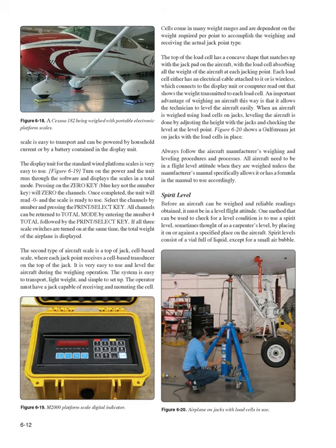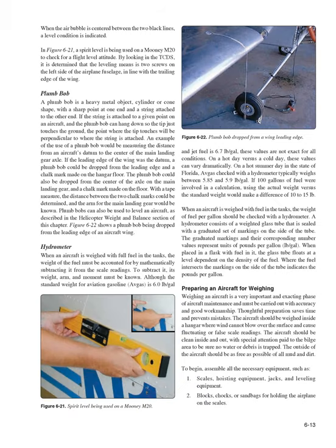Always follow the aircraft manufacturer's weighing and leveling procedures. All aircraft need to be in a flight level attitude when weighed unless the manufacturer's manual specifically allows otherwise. Spirit Level: Before an aircraft can be weighed and reliable readings obtained, it must be in a level flight attitude. One method is to use a spirit level (similar to a carpenter's level) by placing it on or against a specified place on the aircraft. Spirit levels consist of a vial full of liquid with a small air bubble; when the bubble is centered between the two black lines, a level condition is indicated.